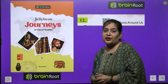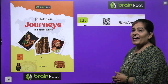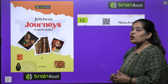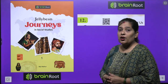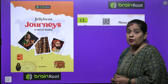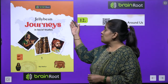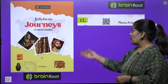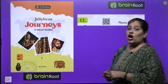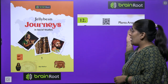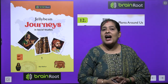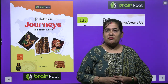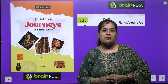Hello my dear kids, how are you? I hope you all are fine. So we are going to start another chapter of our SST book by Brain Root series. The name of our book is Jelly Bean Journeys in Social Study Class 1. Now we will start chapter number 12 and the name of our chapter is Plants Around Us. Let's start the chapter.